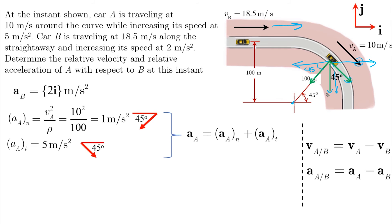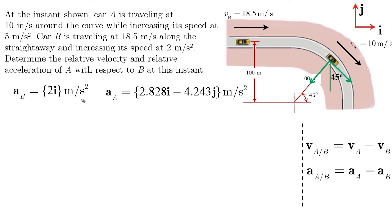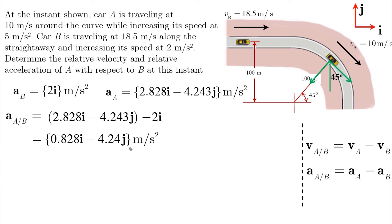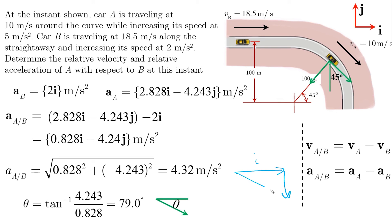Adding all components together to find the acceleration of car A and collecting equivalent terms, we get the I-direction bracket and the J-direction bracket, resulting in an acceleration of 2.8i minus 4.2j. With the acceleration of B and the acceleration of A found, we subtract A from B to find A_A relative to B. This gives a positive I component and a negative J component, so the magnitude is 4.32 meters per second squared. The angle, with positive I and negative J, is found using tan inverse of Y over X, which gives 79 degrees.